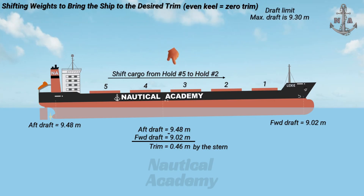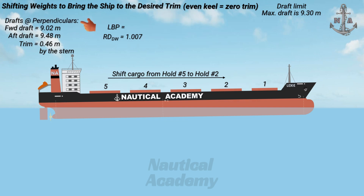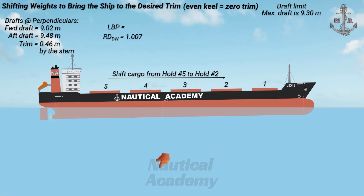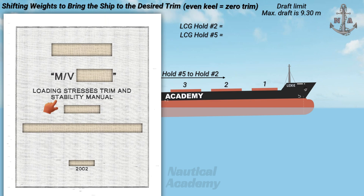To achieve this, we need the forward and aft drafts, the ship's length between perpendiculars or LBP, and the relative density of dock water, which in this case is 1.007. The given drafts in this scenario are the drafts at the perpendiculars. We also need the longitudinal center of gravity, or LCG, of cargo hold number five and hold number two, since these are the cargo holds involved in shifting weights.